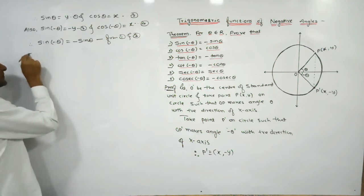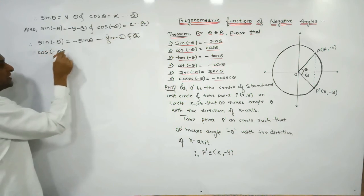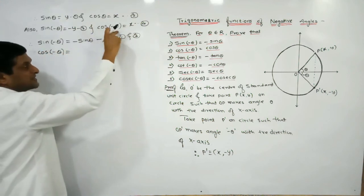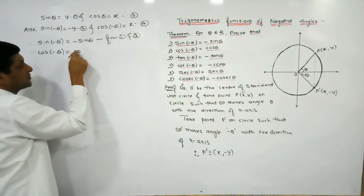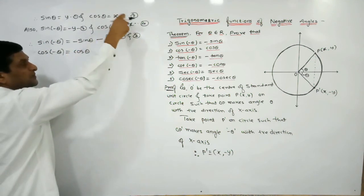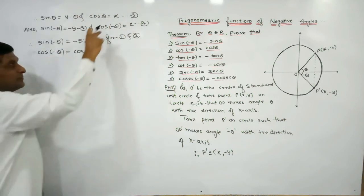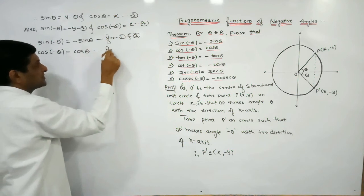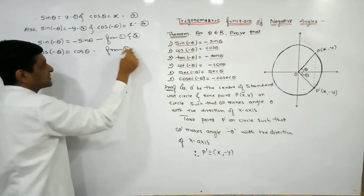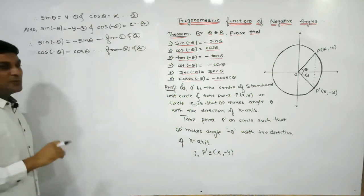Now the second formula. Cos(-θ) equals the x-coordinate, which is x. And x means cos θ from equation 2. So cos(-θ) = cos θ. This result comes from equations 2 and 4.